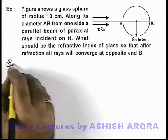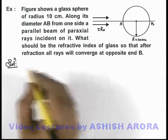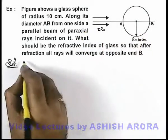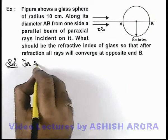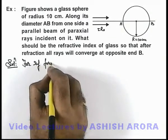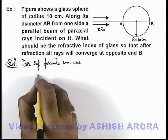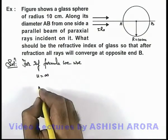Now in this situation, we need to produce an image of an object placed at infinity at position B. So for refraction formula, we can use the object distance to be located at infinity.